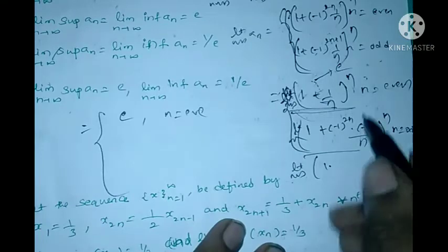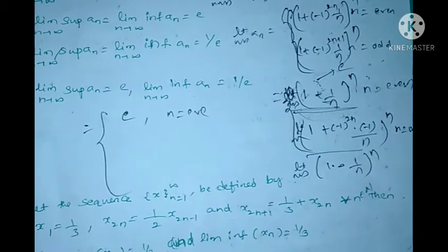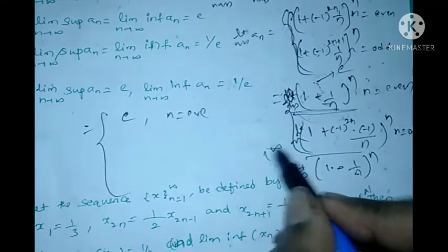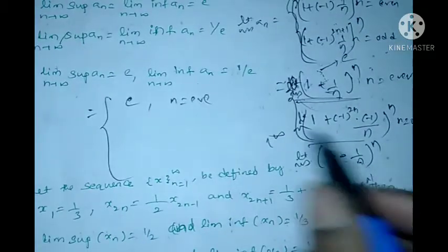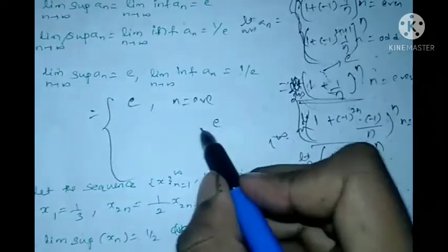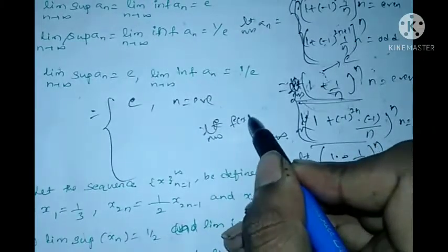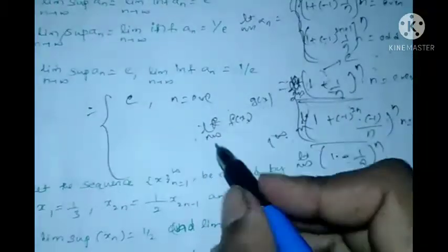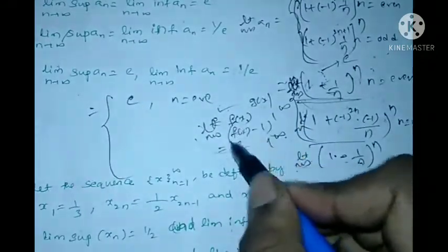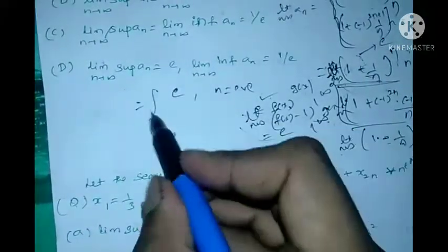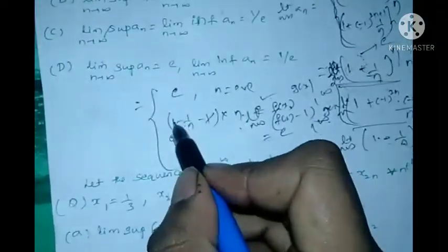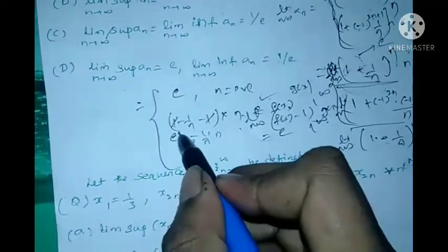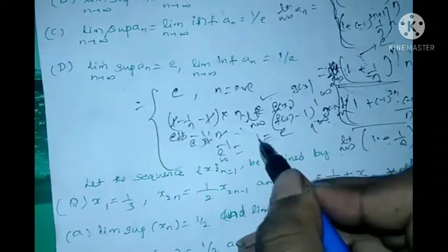When n is odd, we get (1 - 1/n)^n, which is a 1^∞ indeterminate form. The trick to solve this: when we get the 1^∞ form, we use the direct result e^[(f(x) - 1) · g(x)]. Here f(x) = 1 - 1/n, so f(x) - 1 = -1/n, multiplied by n gives e^(-1) = 1/e.